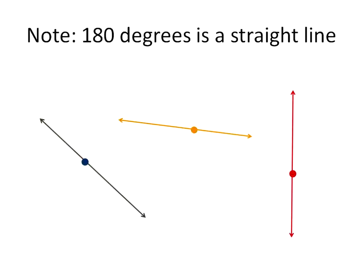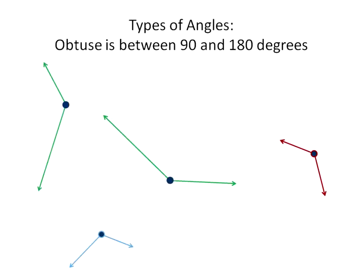One more piece of vocabulary we need to know. Something we need to know here is that 180 degrees is a straight line. So the angle measurement, if we measured the angle from here around to here, it's 180 degrees. And we need to know that for our next type of angle.